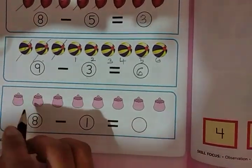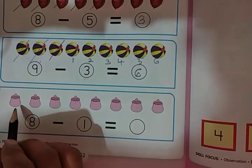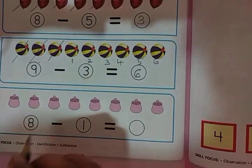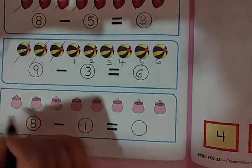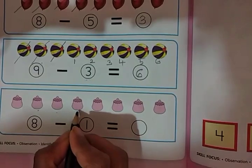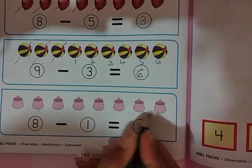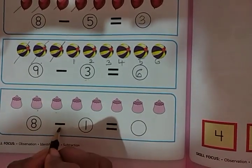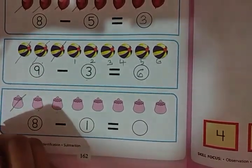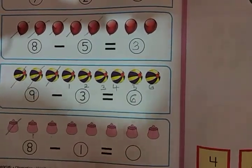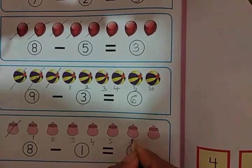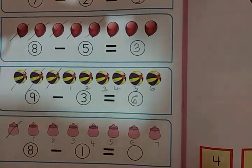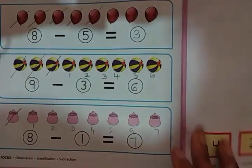See now this one, children. What is this? This is a jar. So how many jars are there? It's 8 jars. So we will count: 1, 2, 3, 4, 5, 6, 7, 8. So in these 8 jars we are subtracting only 1 jar. So how much is left? See: 1, 2, 3, 4, 5, 6, 7. 7 is the answer.